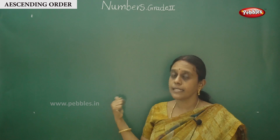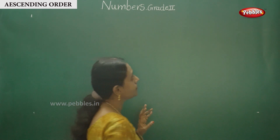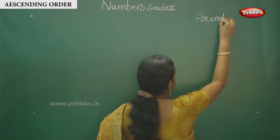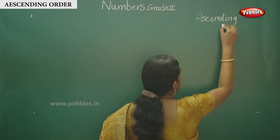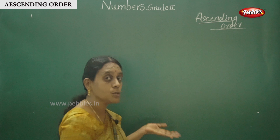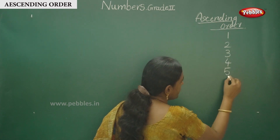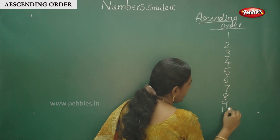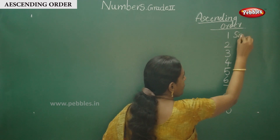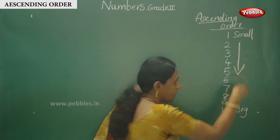First we will discuss ascending order using some more examples. Let's recap: ascending order — ascending order means small to big. Okay children, 1, 2, 3, 4, 5, 6, 7, 8, 9 and 10. This is the basic number from 1 to 10. Small to big: this one is small, and at last this one is big. So from this order, you have to write this order. This is ascending order.